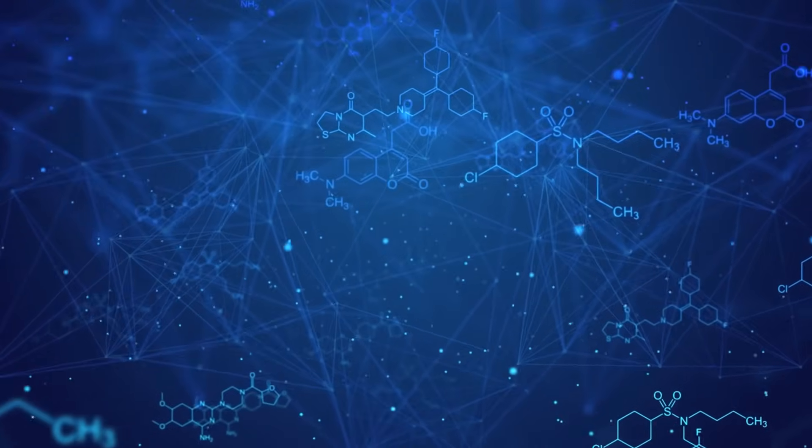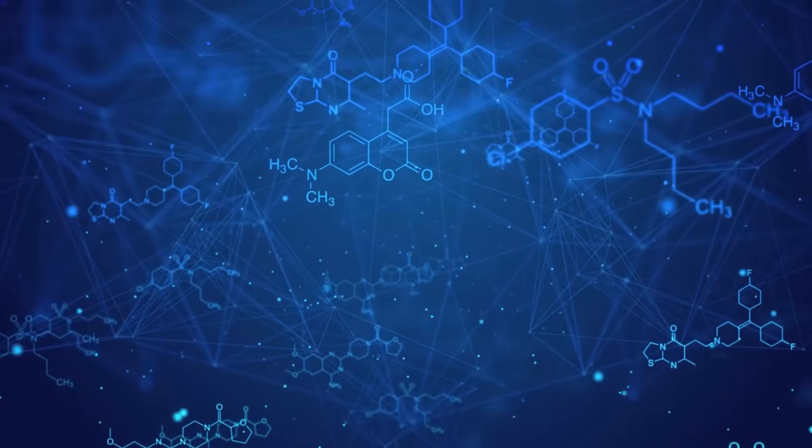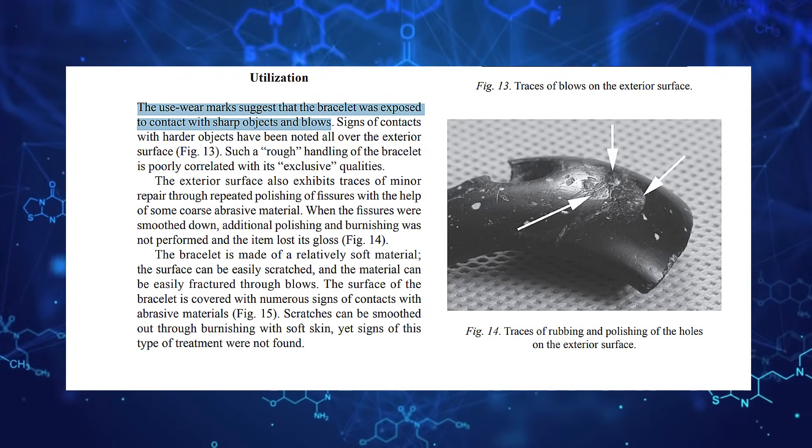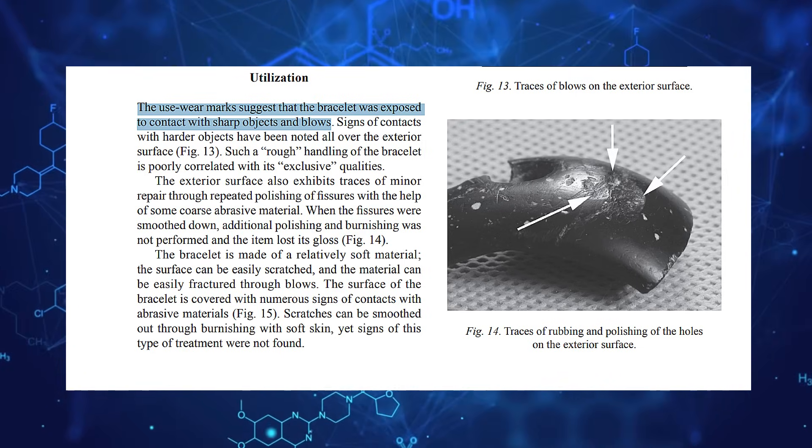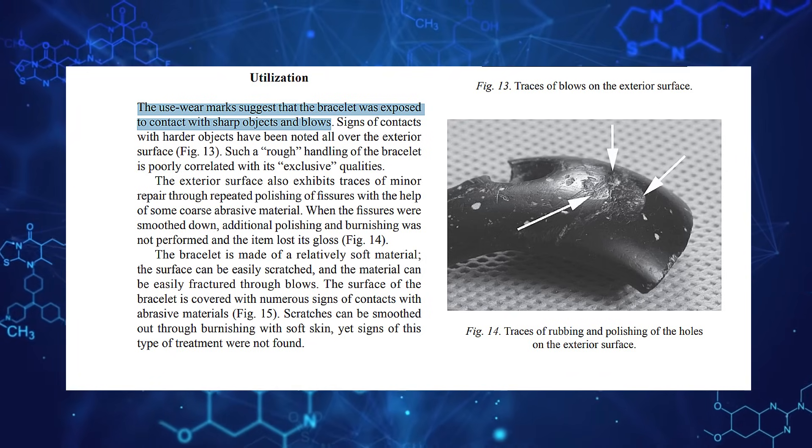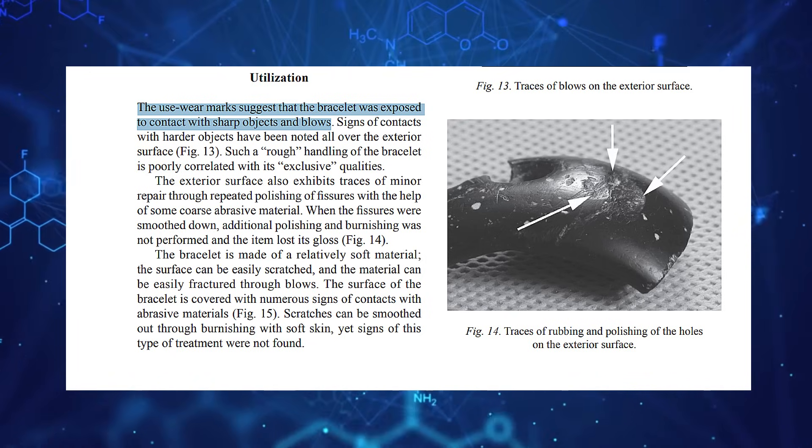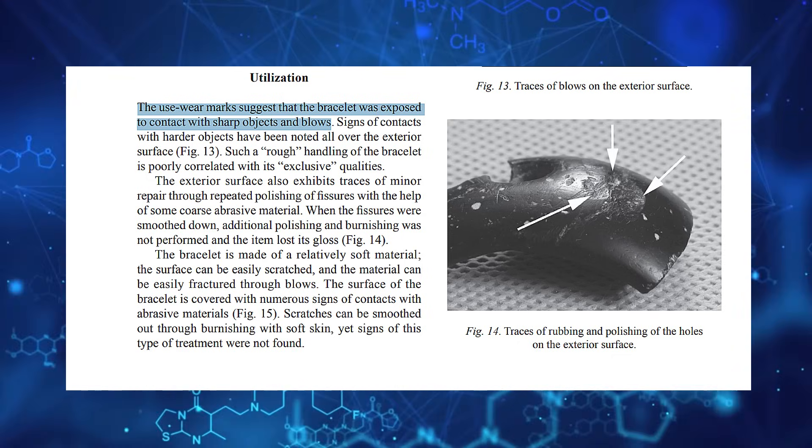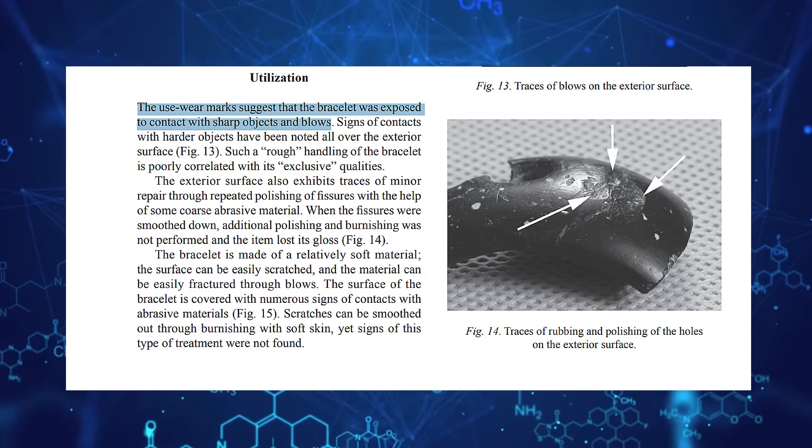Another theory posits that the breakage occurred during an interpersonal conflict, or a raid involving rival groups which were not uncommon in prehistoric societies. By this period, Homo sapiens were equipped with advanced tools and weapons, including projectiles and spears, which could have caused the damage observed on the bracelet.